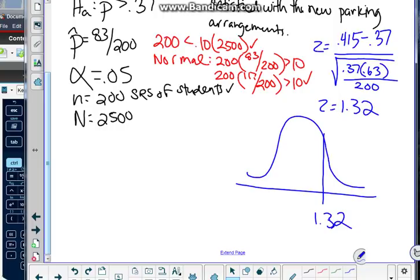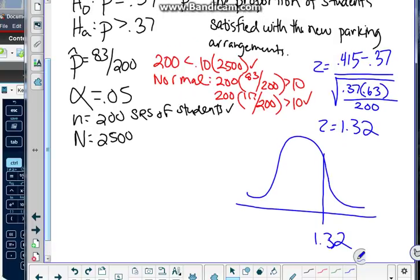In this case, we're looking for values that are greater than 37%. So I don't want to look at the left side. I want to look at the right side. Which means I need to subtract from 1.